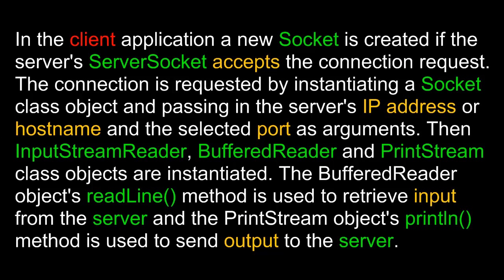In the client application, a new socket is created if the server's ServerSocket accepts the connection request. The connection is requested by instantiating a Socket class object and passing in the server's IP address or host name and the selected port as arguments. Then, InputStreamReader, BufferedReader, and PrintStream class objects are instantiated. The BufferedReader's readLine method retrieves input from the server, and the PrintStream's println method sends output to the server.